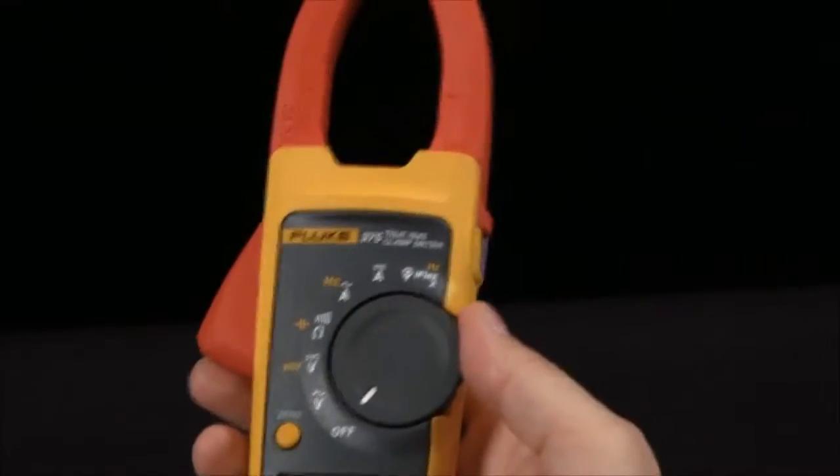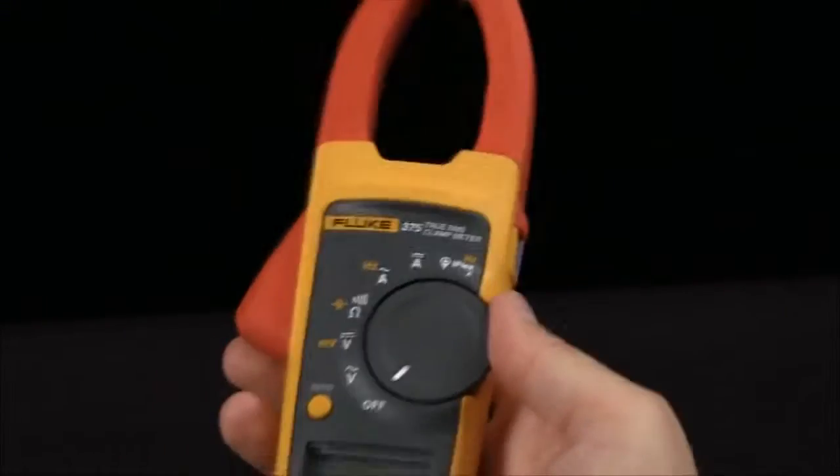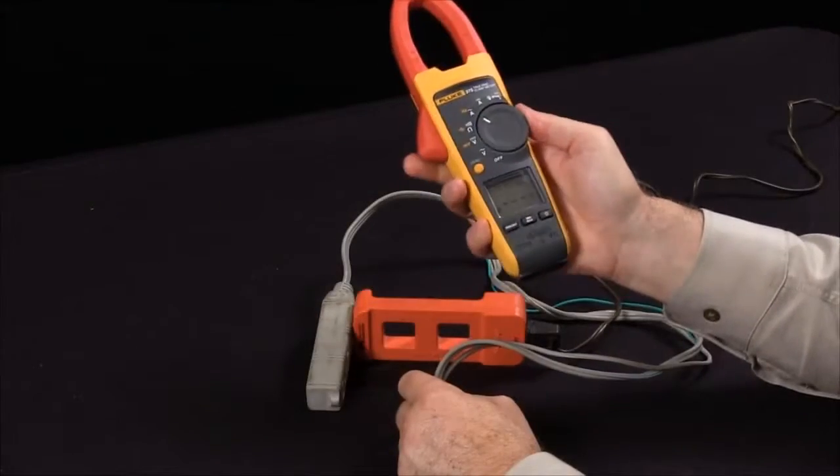How do I measure the current flow going through a power cord and out to a load? Let's set the clamp meter to read AC amps.